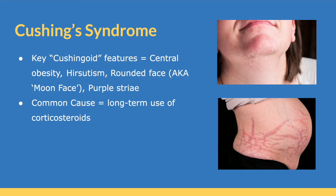The first one is Cushing syndrome. Some of the key Cushingoid features include central obesity, hirsutism, a rounded face — sometimes known as a moon face — and purple striae, which you can see in the bottom right picture. The most common cause of Cushing syndrome is long-term use of corticosteroids, and these features are key signs seen in these patients.